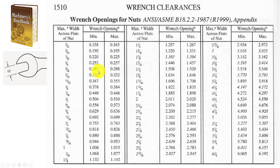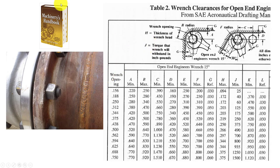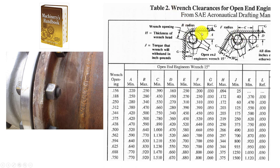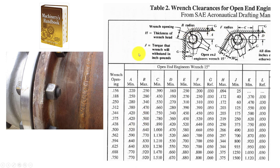They also have standards for fastener spacing - how close can I put one fastener to the next and still be serviceable? They have charts for different tools: open-end wrenches, box-end wrenches, which let you get even closer. This tells me how close I can place fasteners without hitting a wall with the wrench and still be able to take it apart. That helps in sizing a flange not just for pressure, but also for serviceability.